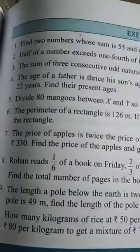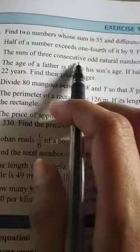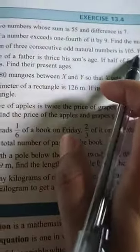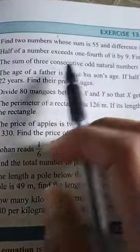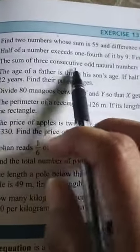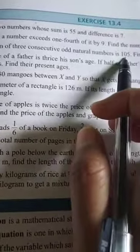Now question number 3: the sum of 3 consecutive odd numbers is 105. Consecutive means continuous numbers. So the sum of 3 consecutive odd numbers is equal to 105. What are those 3 consecutive odd numbers? We need 3 continuous but odd numbers.